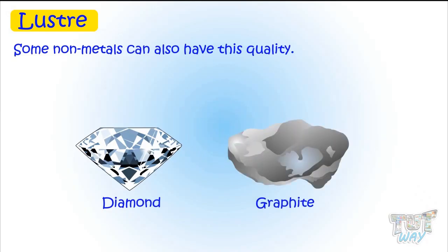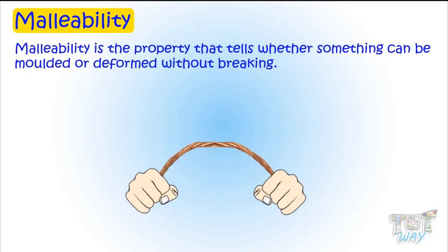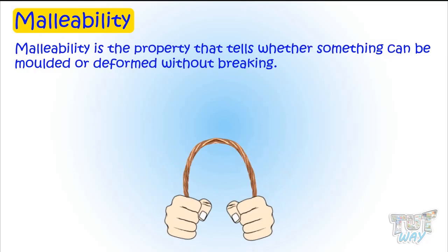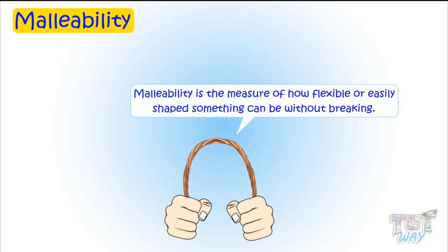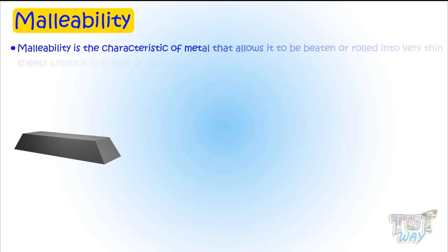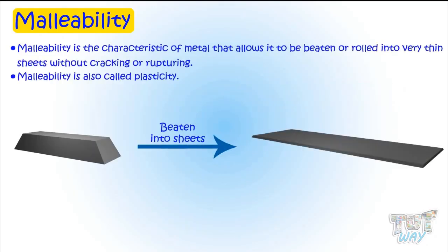Now let's learn another property, that is malleability. Malleability is a property that tells whether something can be molded or deformed without breaking — that is, how flexible or easily shaped something can be without breaking. More specifically, it is the characteristic of metal that allows it to be beaten or rolled into very thin sheets without cracking or rupturing.